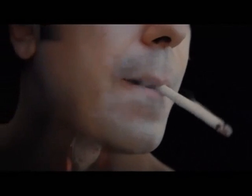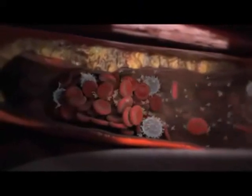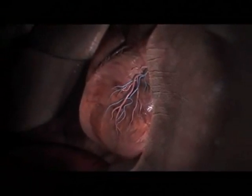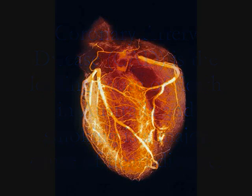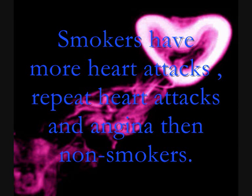When you smoke, every puff damages cells throughout your body. Cigarette smoke contains over 7,000 chemicals that spread through your blood vessels, causing inflammation and clotting, restricting oxygen flow, and doubling your risk of heart attack and death. Coronary artery disease is the leading cause of death among Australians, and smoking is a major cause. Smoking contributes to the development of atherosclerosis. Smokers have more heart attacks and angina than non-smokers, and are four times more likely to die from coronary artery disease.